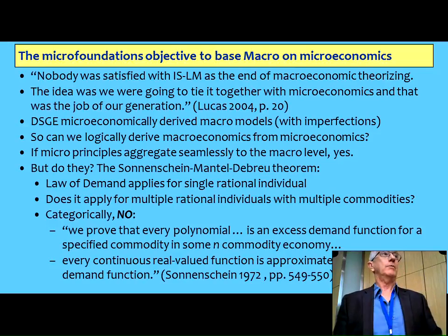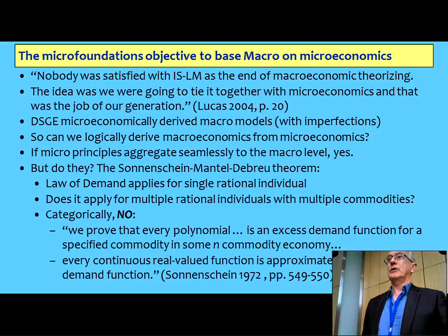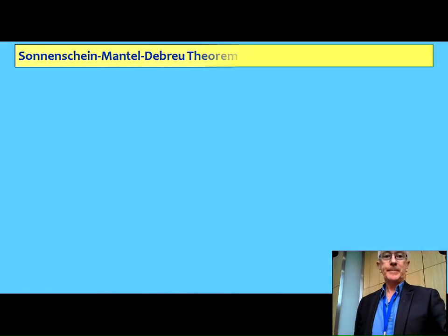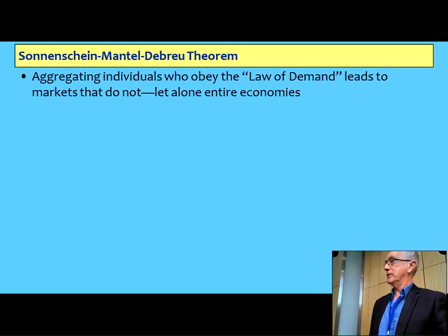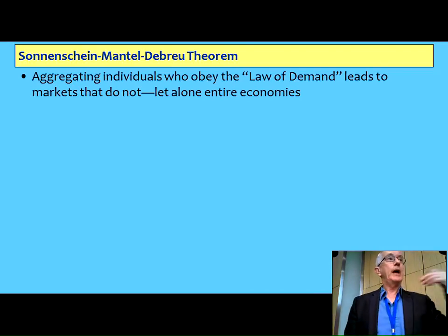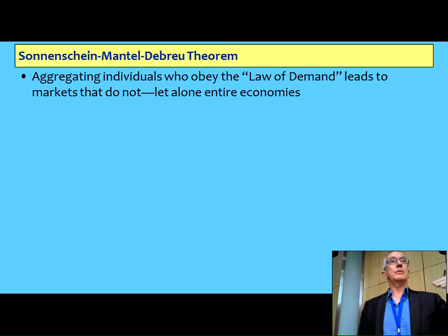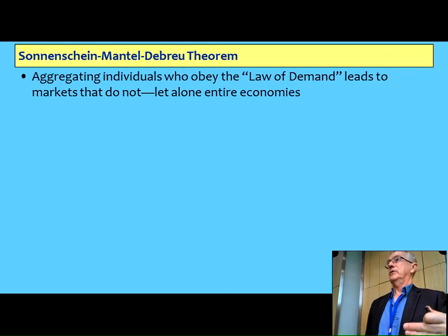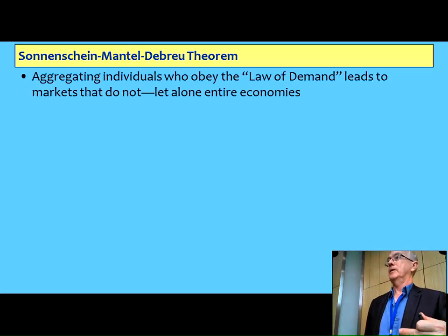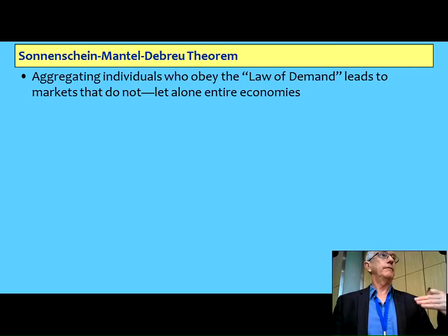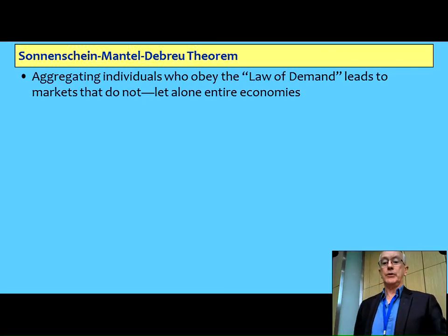That is not what you get if you treat the entire economy as a single utility-maximising agent. So you get this paradox — actually a very common one — that if you aggregate a large number of individuals who all obey the law of demand, you get market demand curves that don't obey the law of demand. And that's a well-established, very sound result in the literature.